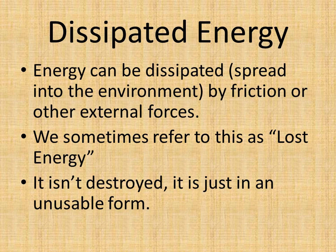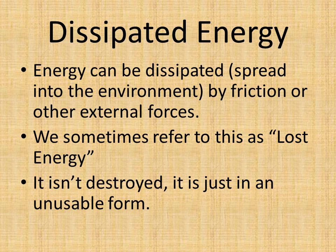The last type of energy is dissipated energy. There's no specific equation for this one, but we will solve for it numerically. Dissipated energy is energy that's lost — most frequently due to friction, heat, or sound. Dissipated energy isn't destroyed; it's just in an unusable form. We've lost that energy and it's not in a form where we can collect it and bring it back. It's transferred to a form that's gone forever.